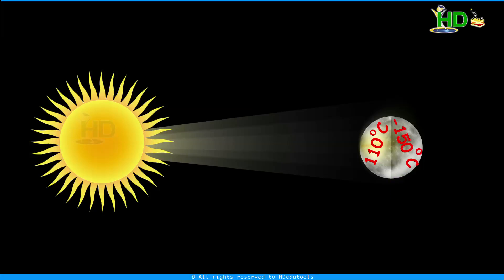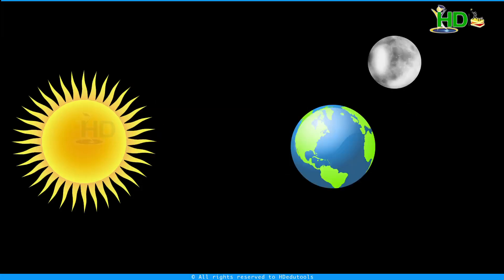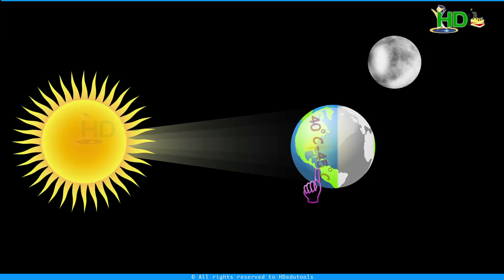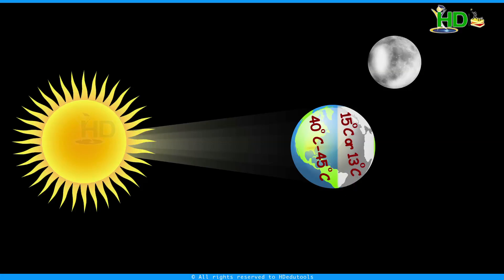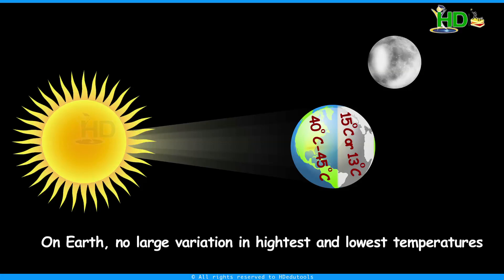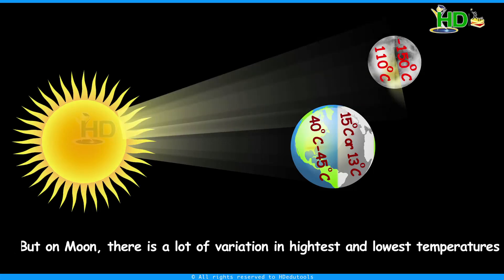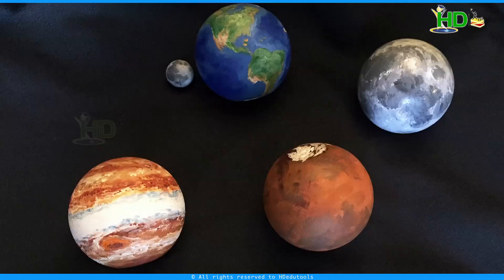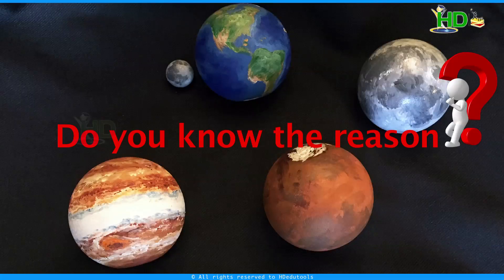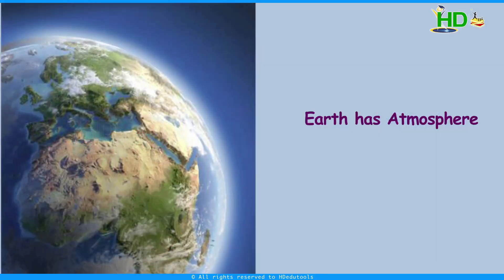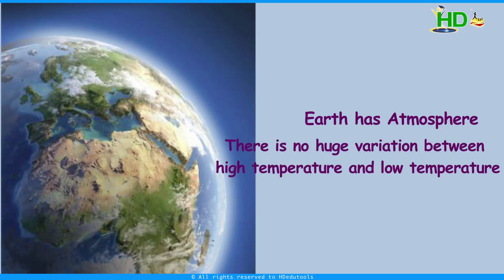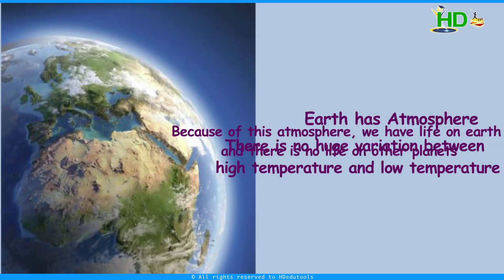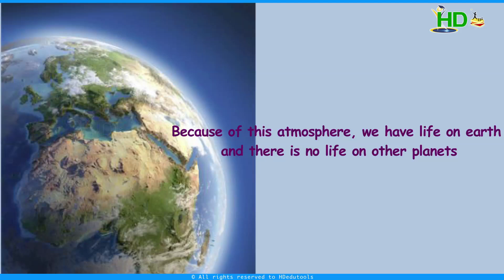Do you know why the temperature has this large variation? In the case of earth, when the sun shines, the temperature rises to about 40 to 45 degrees Celsius. When there is no sunshine, the temperature falls to about 15 or 13 degrees Celsius — no large variation. But on the moon, there is a lot of variation between highest and lowest temperatures. The reason is that earth has an atmosphere. Because of the atmosphere, there is no huge variation between high and low temperatures on earth. Because of this atmosphere, we have life on earth, whereas there is no life on other planets.